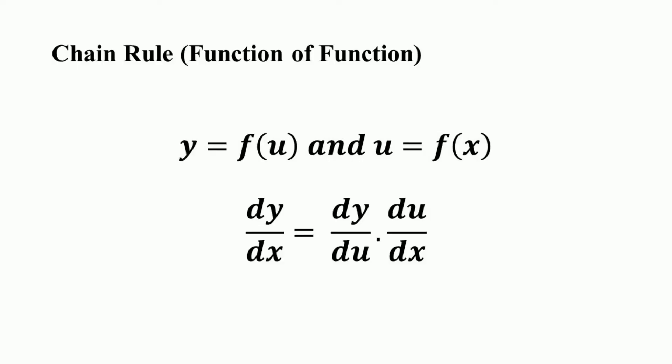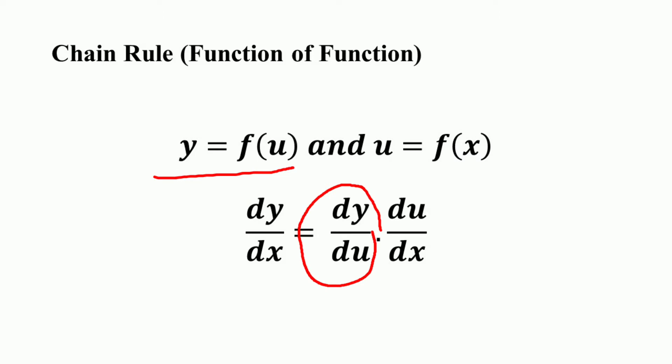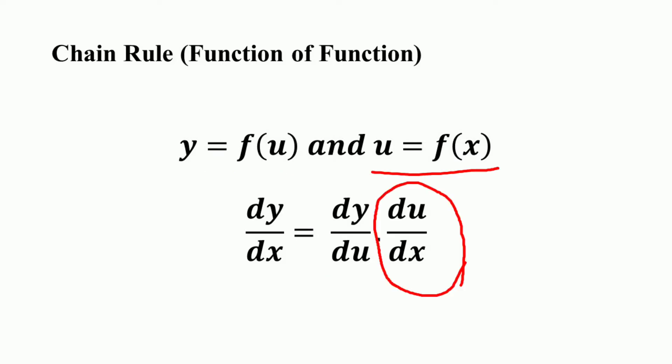As per the chain rule, the composite function — that is, y is equal to a function of u, and u is in turn a function of x — is a composite function of two variables. So the derivative dy/dx is equal to the derivative of y with respect to u, that is dy/du, multiplied by the derivative of u with respect to x, that is du/dx.